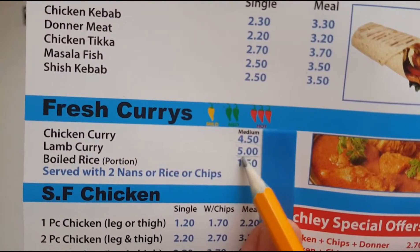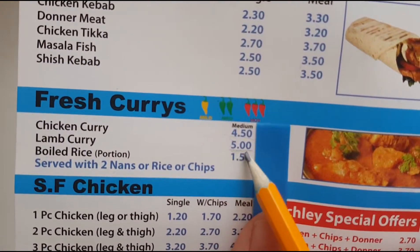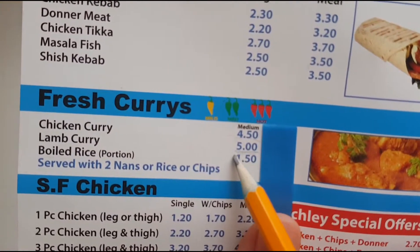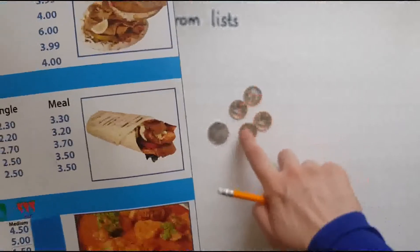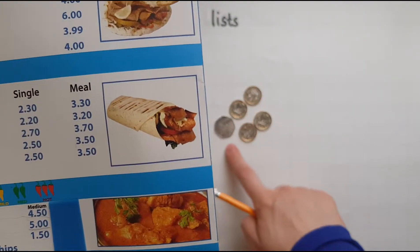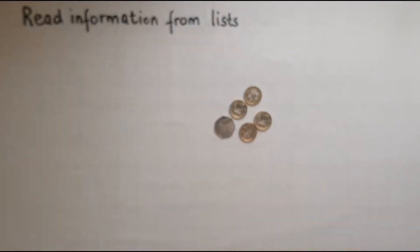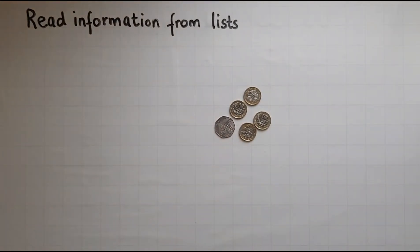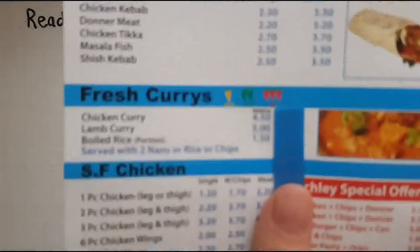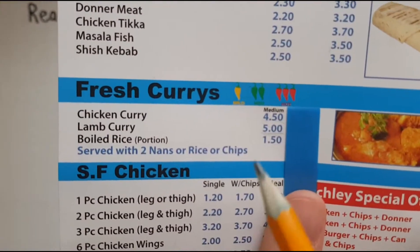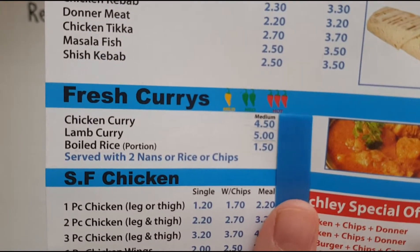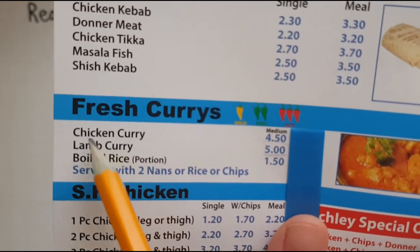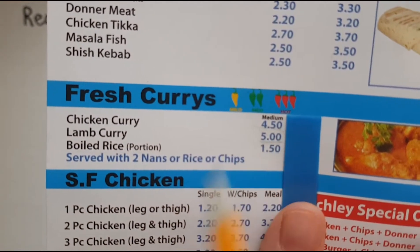I have £4.50 — how much more do I need? If I had another £0.50 I would be able to buy the lamb curry, but at the moment I can't do that, so I'm going to pick chicken curry. I can afford it.